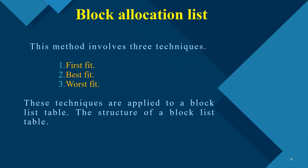The block allocation list involves three important techniques: first fit, best fit, and worst fit. The contiguous allocation method is classified into three types: block allocation list, chain method, and bitmap method. The block allocation list describes how blocks are allocated to store a process, and it involves three techniques — first fit, best fit, and worst fit.